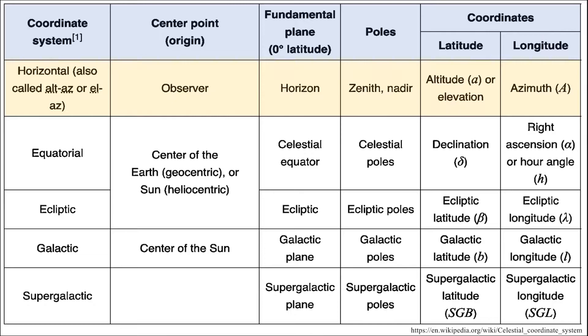First, we'll briefly look at the horizontal coordinate system, which uses altitude and azimuth as its coordinates. Then we'll look at the equatorial coordinate system, which uses declination and right ascension.